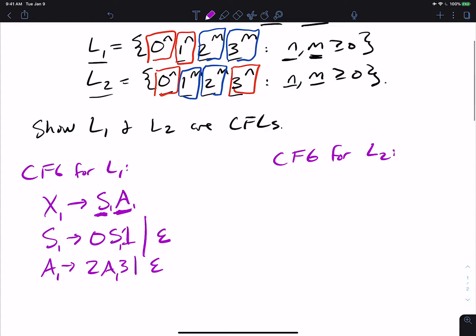And then for L2, we know this is slightly different. I need to be able to make 1 to the m, 2 to the m. So let's have s2 make 1 s2, 2, or empty. So that makes 1 to the m, 2 to the m.